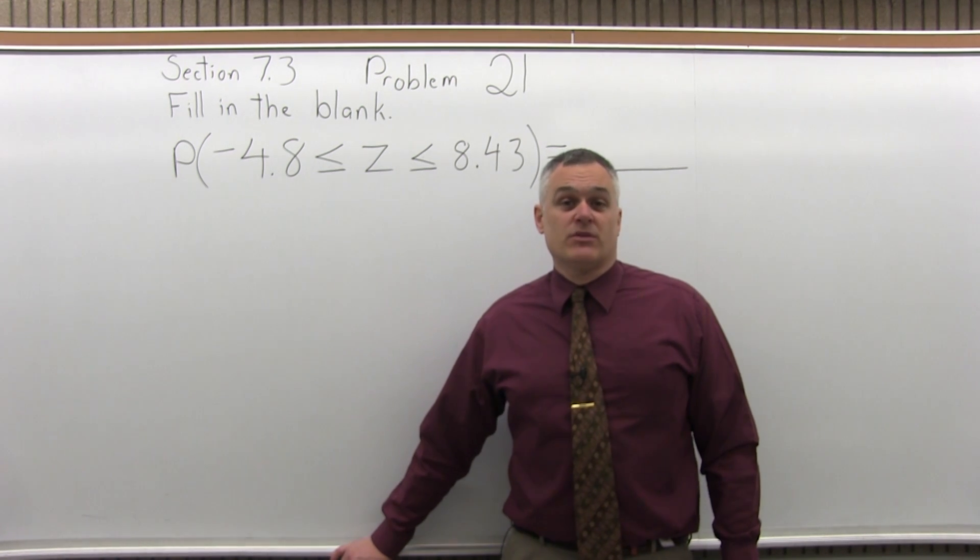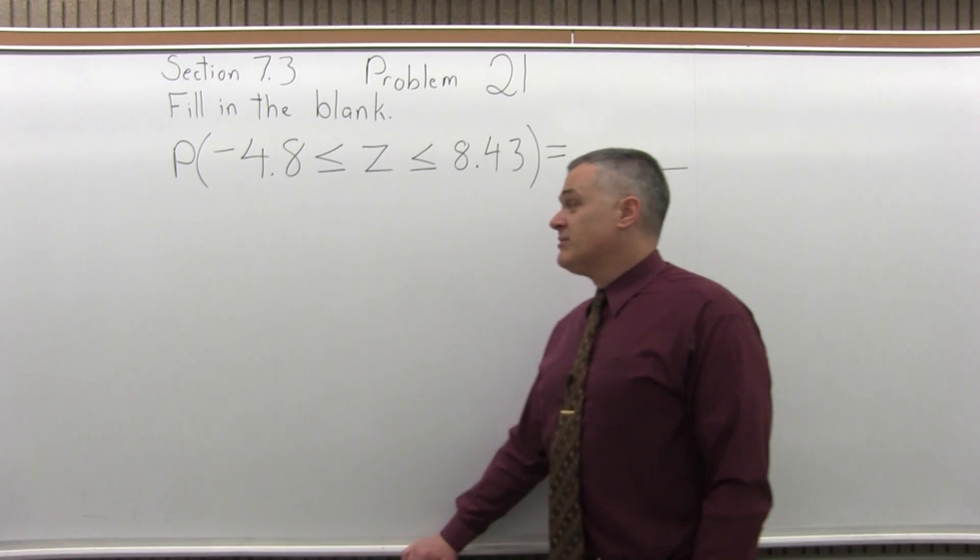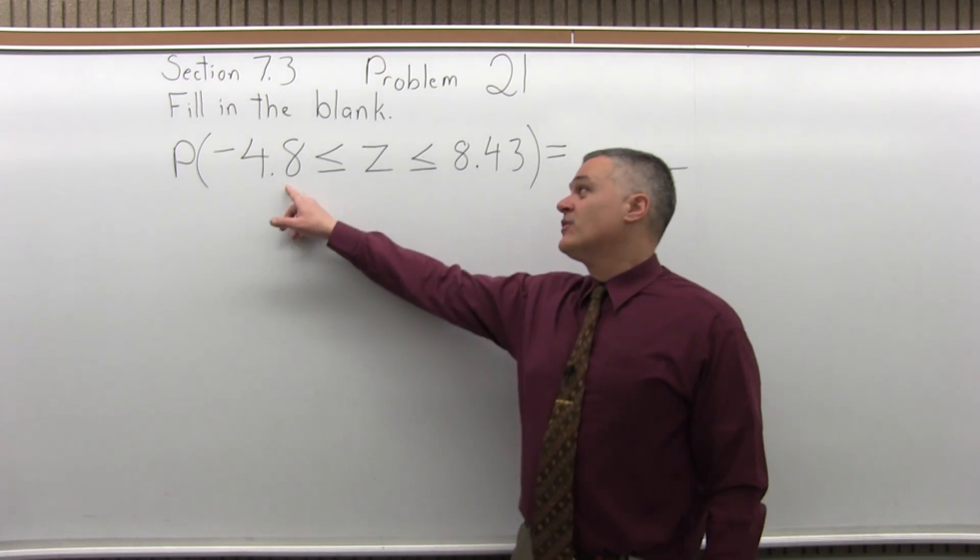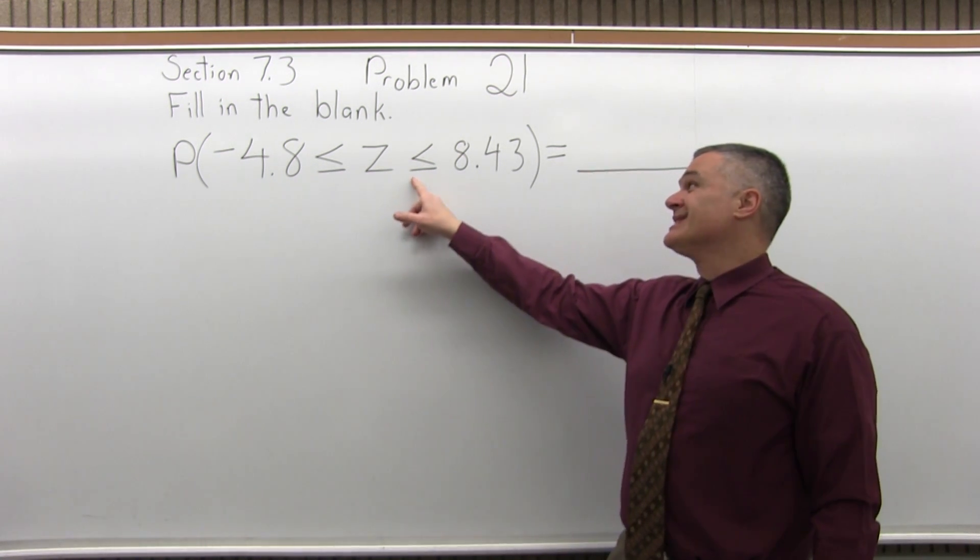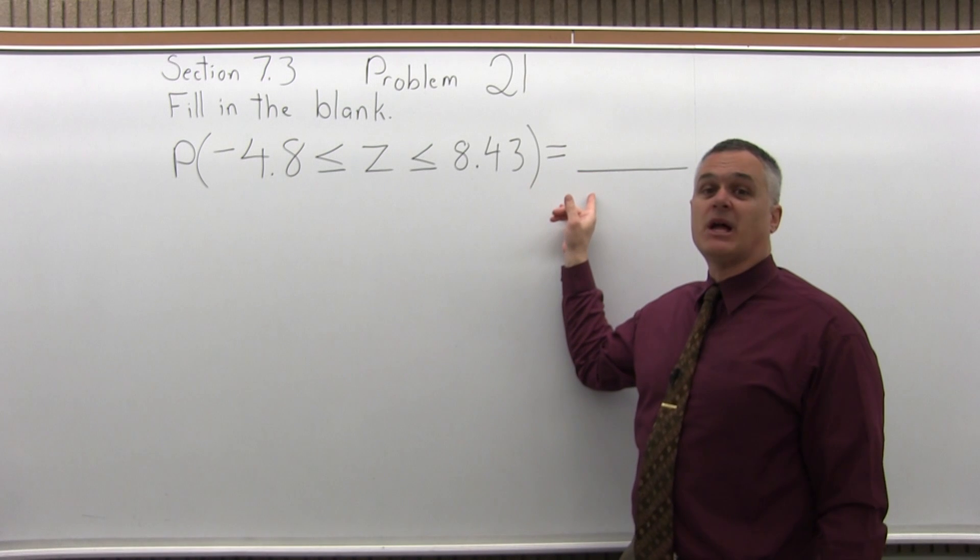This is Section 7.3, Problem number 21. It says fill in the blank: the probability that negative 4.8 is less than or equal to z is less than or equal to 8.43 equals blank.